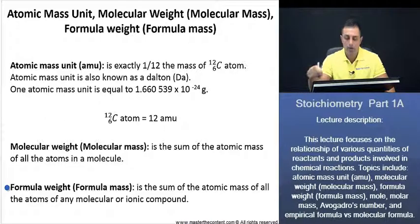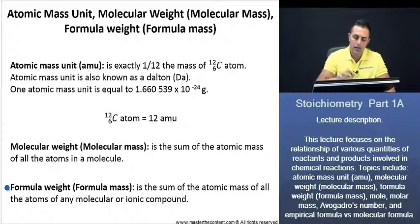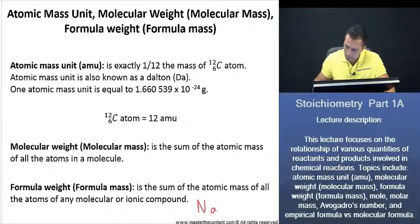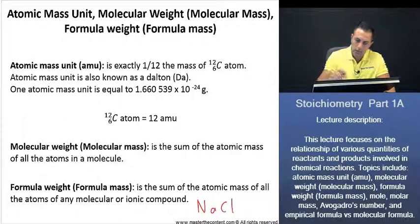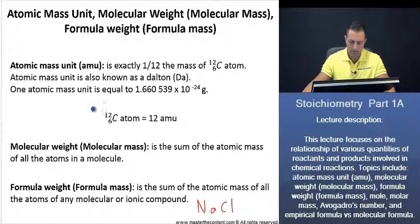Now, before we move on to our next definition here, when working with various substances, you may not always have a molecule. What I mean by that is, sometimes you may be asked to find the weight of an ionic compound. And just to give you an example of an ionic compound, we have sodium chloride. Thus, when working with ionic compounds, as opposed to the molecular weight, you're going to be asked for the formula weight, also known as formula mass. And that is the sum of the atomic mass of all the atoms of any molecular or ionic compound.